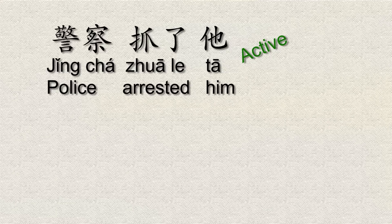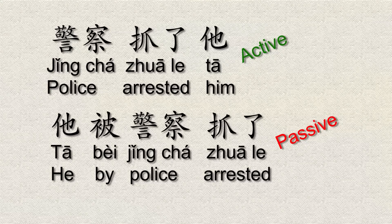Let's now look at how 被 is used in Chinese with that same example. 'The police arrested him' is the active sentence, and if we were to put that into the passive we would say: 'tā bèi jǐngchá zhuā le' — so 'he, by police, arrested.'